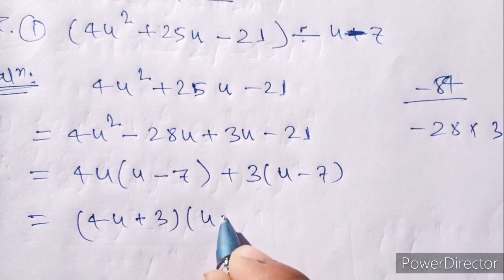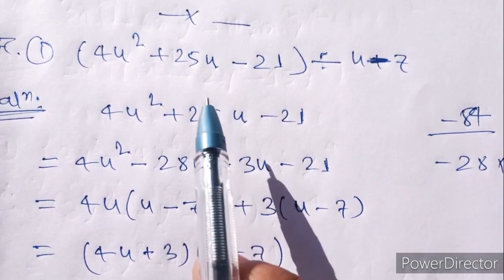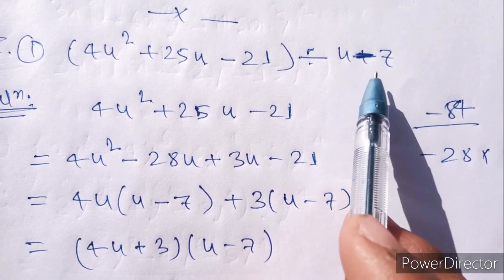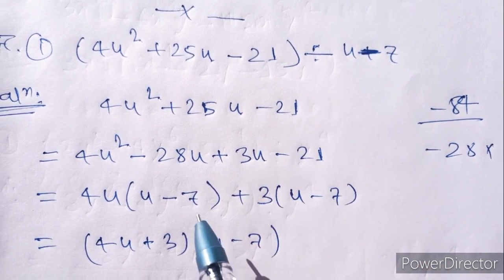Equal 4u plus 3, u minus 7. So dividing by u plus 7.